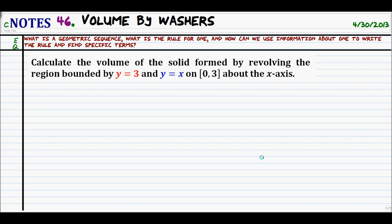Our goal for today is to extend what we did yesterday. Yesterday we began calculating the volume of solids of revolution, which meant we were going to take a region in two dimensions and create a pseudo paper lantern by layering a bunch of those things around in a circle, creating a three-dimensional object whose cross sections are all circular. Just like solids of known cross sections, if we figure out the area for each representative circle, we can sum them up with an integral to find the actual volume.